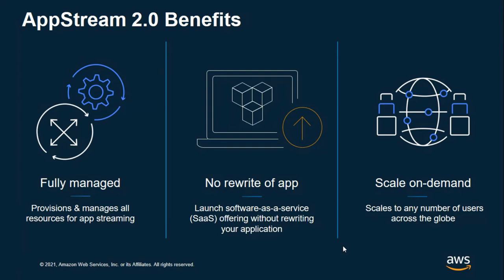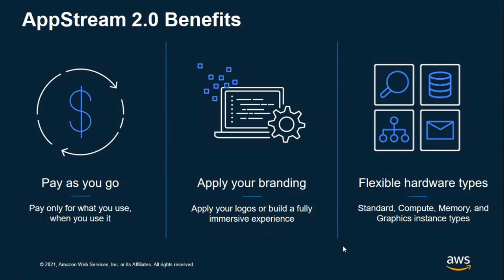AppStream scales on demand. AppStream allows ISVs to scale their environment up or down based on their customers' usage patterns. ISVs can scale their application streaming to any number of users across the globe without acquiring, provisioning, and operating streaming infrastructure or hardware. AppStream offers pay-as-you-go pricing based on user concurrency. You only pay for the streaming resources that you use, plus a small monthly fee per streaming user. There's no upfront investment and no long-term commitments when using Amazon AppStream 2.0. ISVs are able to apply their own branding — they can customize the appearance of AppStream with their own branding images, text, and website links — helping them display their branding to customers during application streaming sessions and providing a familiar, application-centric experience.